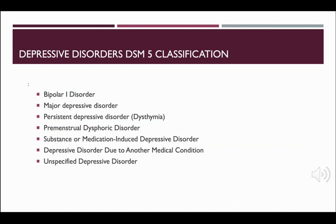The DSM-5 classifies depressive disorders as follows: Bipolar 1 disorder — we'll talk more about that in an upcoming lecture — major depressive disorder, persistent depressive disorder also known as dysthymia, premenstrual dysphoric disorder, substance or medication-induced depressive disorder, depressive disorder due to another medical condition, or unspecified depressive disorder.